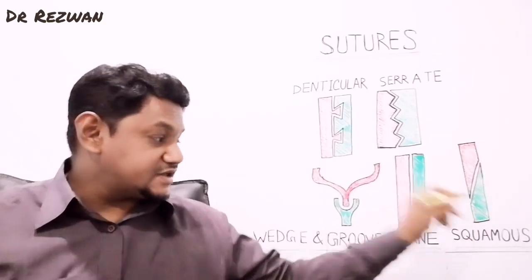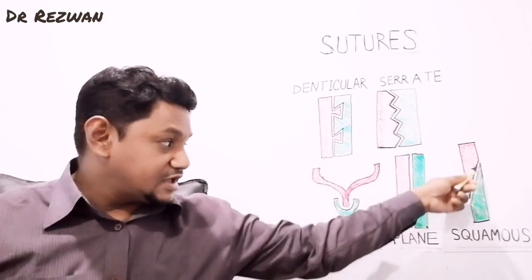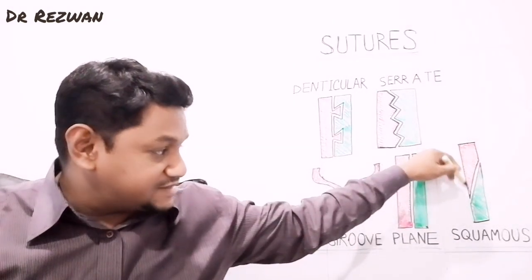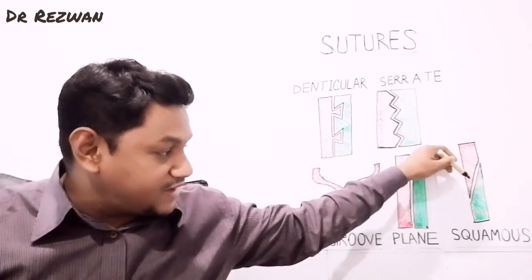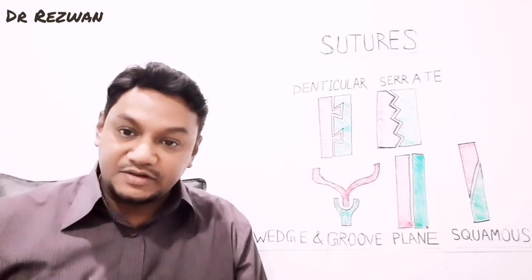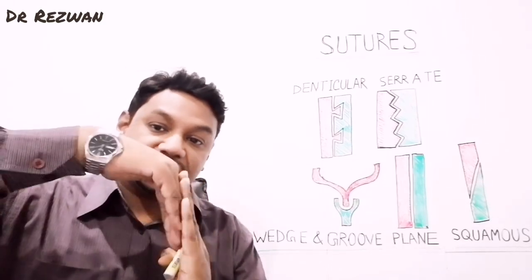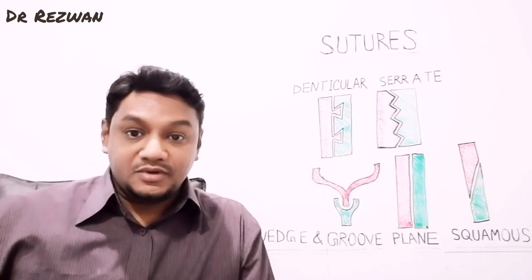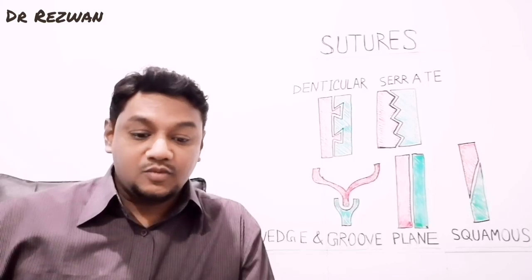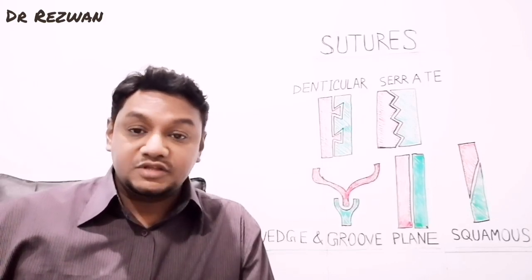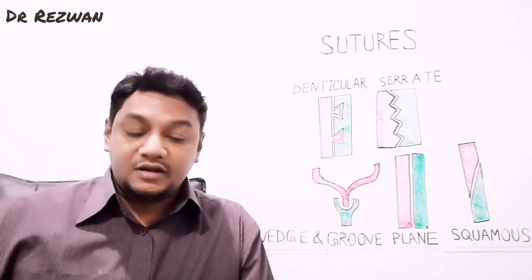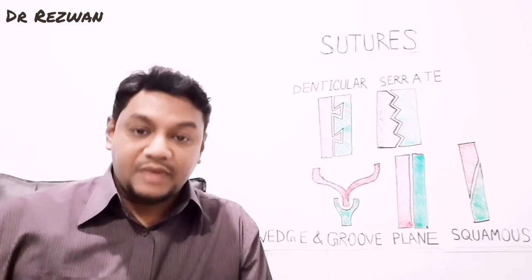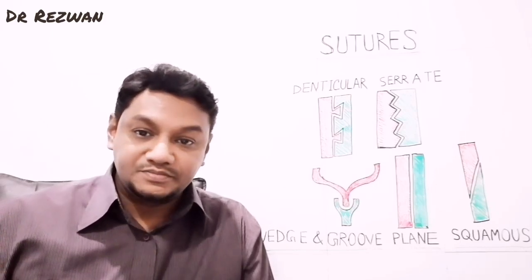There is also a squamous type of sutural joint. In this variety, one articular surface is very flat and the other articular surface is also flat, and these two flat surfaces overlap each other — one articular surface overlapping another. This is the squamous type of sutural joint, which is commonly found between the temporal bone and the parietal bone. The squamous part of the temporal bone articulates with the squamous part of the parietal bone, forming this squamous type of sutural joint.